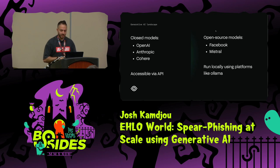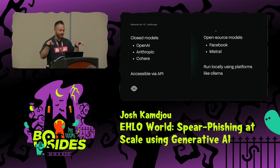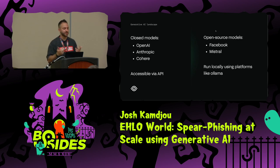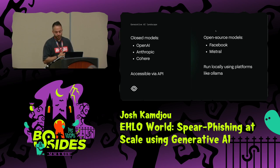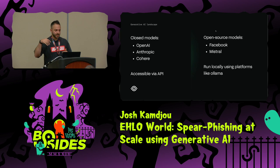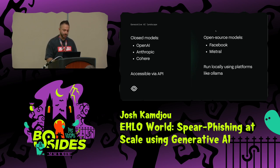Just a couple words on the landscape: we've got two different philosophical approaches. We've got the closed models and the open source models. Everyone is well familiar with OpenAI, maybe not as familiar with Anthropic. These are all accessible via API — that's how these closed models make their models available. And we've got the open source models, which you run locally generally, or can deploy elsewhere using tools like Ollama. So when talking about what we've recreated or even attacker usage, you can generally see either one of these depending on privacy preferences.